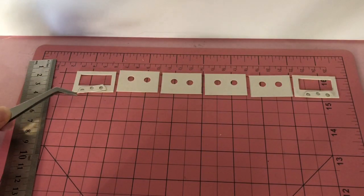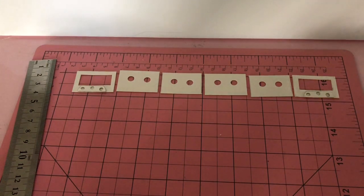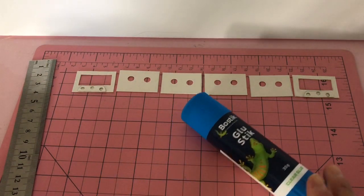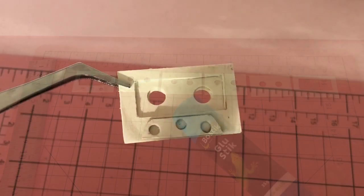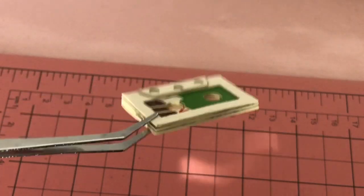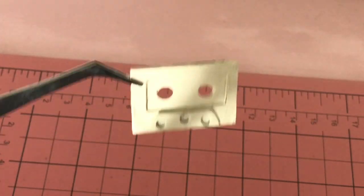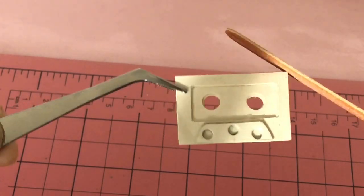With all the pieces ready to go, we can glue them together. Here is what the cassette looks like so far. It's optional, but you can use an emery board to file the corners round.